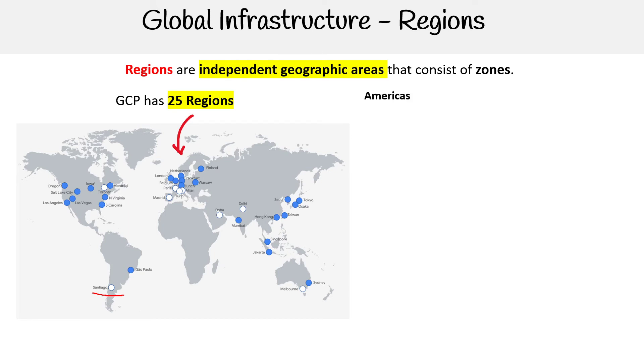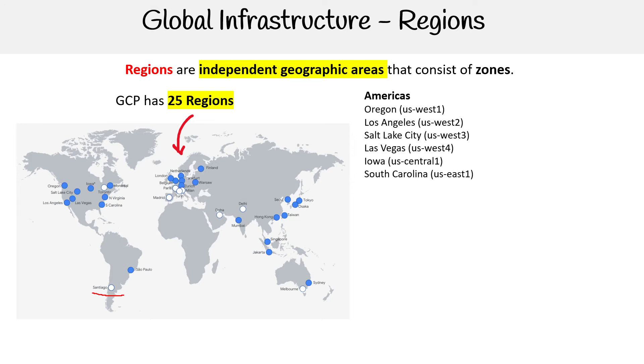For the Americas, we have Oregon, Los Angeles, Salt Lake City, Las Vegas, Iowa, South Carolina, North Virginia, Montreal, and Sao Paulo.